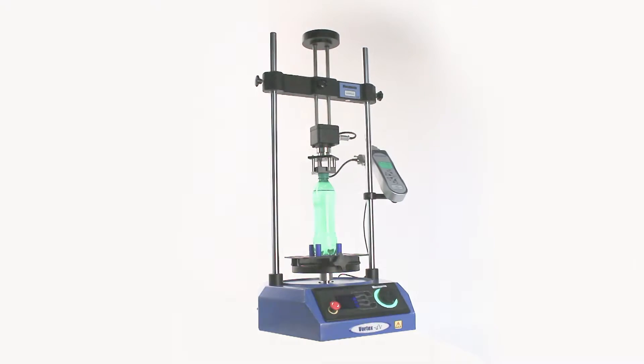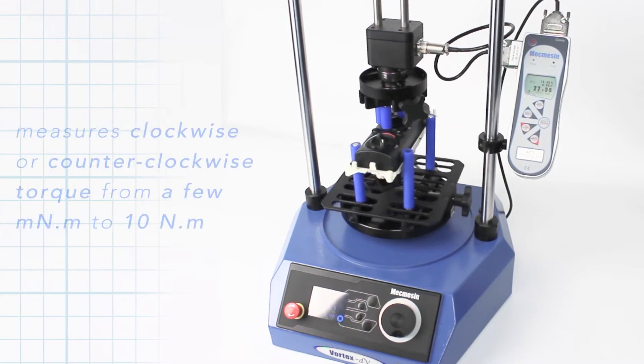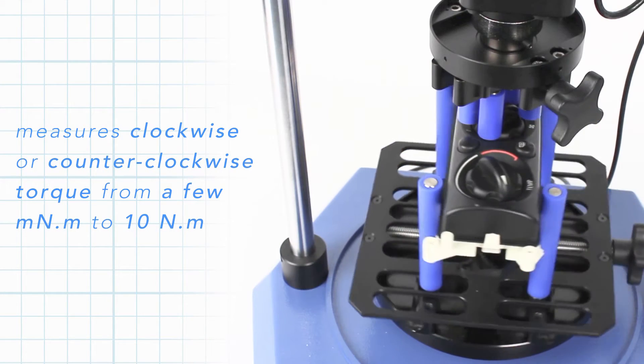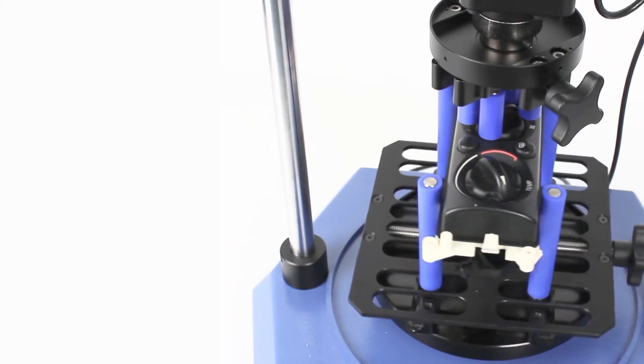Vortex DV measures clockwise or counterclockwise torque, covering the range from a few millinewton-metres right up to 10 newton-metres, ideal for many applications involving small rotary mechanisms.